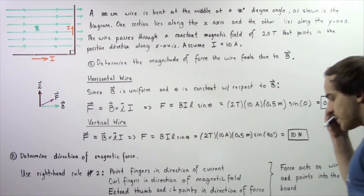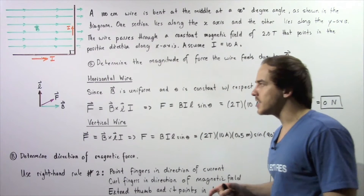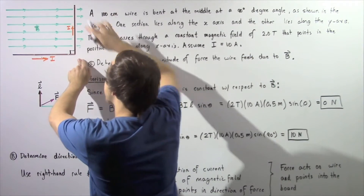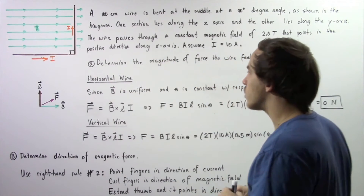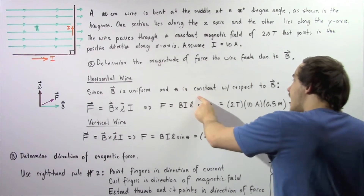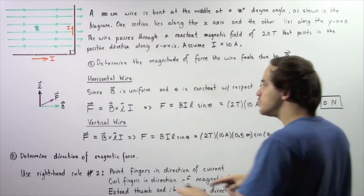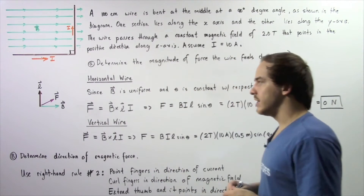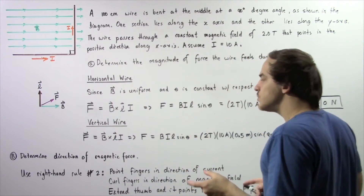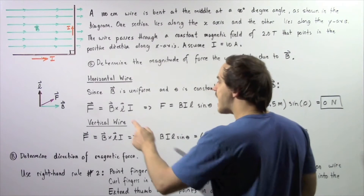Let's begin with part A. Because our wire is bent, we are essentially examining two different sections — the horizontal section and the vertical section. Starting with the horizontal section: because the magnetic field is uniform and the angle is constant throughout, we can use the equation for the magnitude of force, which is equal to the cross product of the magnetic field vector and the length vector, multiplied by the electric current I.